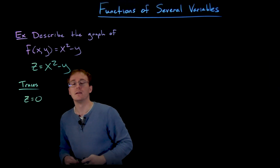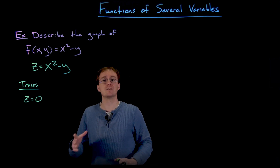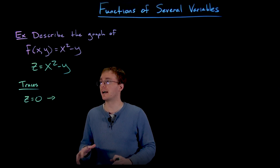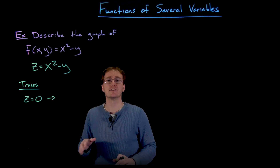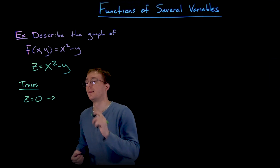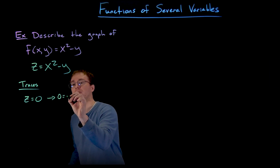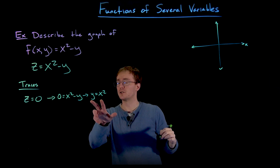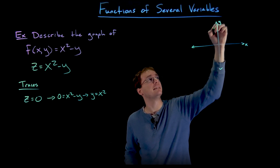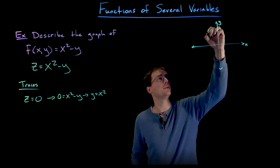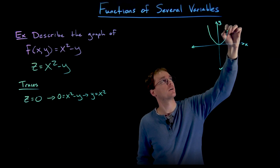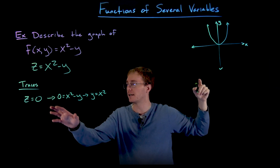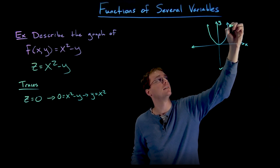A good trace to start with is a horizontal trace like z equals zero. The plane z equals zero gives us the xy-plane, so we're finding where our three-dimensional surface intersects the xy-plane. Setting z equal to zero in our equation gives us 0 equals x squared minus y, which rearranges to y equals x squared. This trace is the graph of y equals x squared — a concave-up parabola with a vertex at the origin.